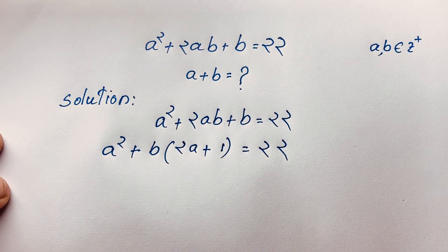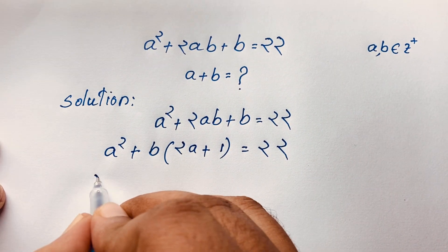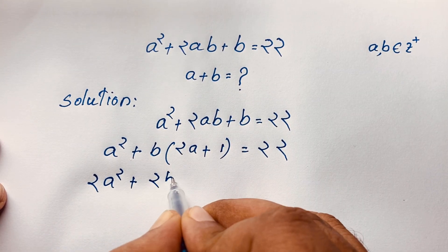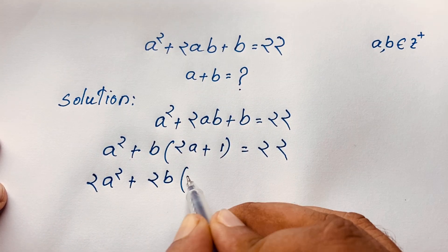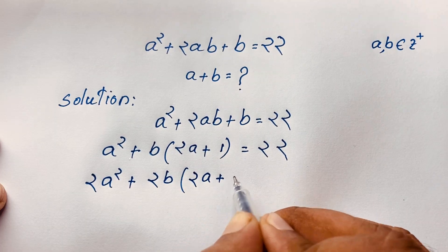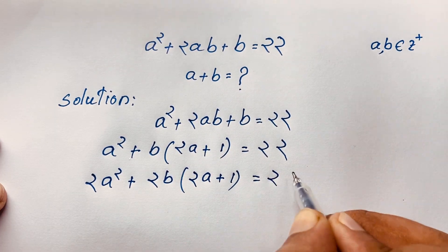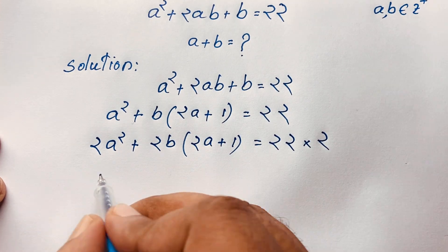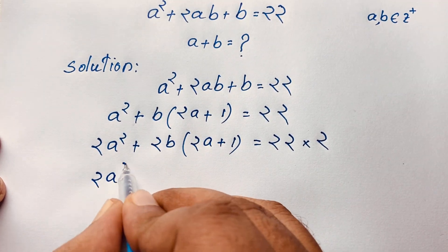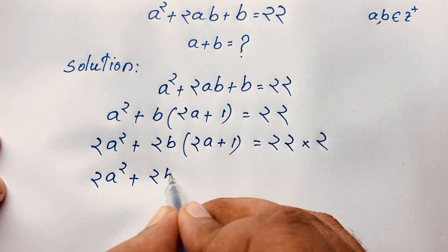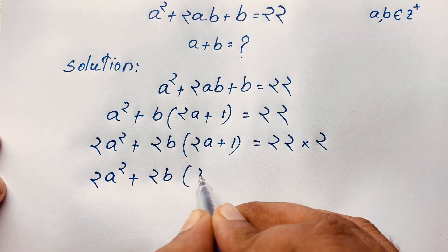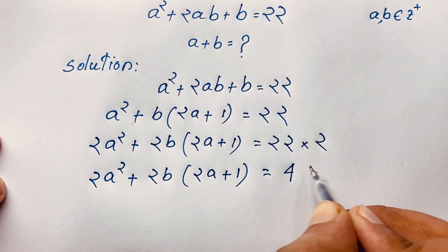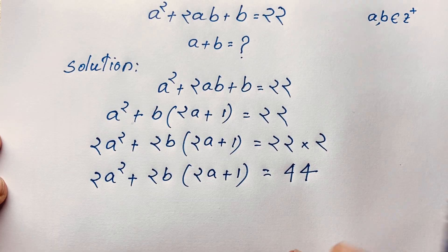Now I multiply both sides by 2, so it will be 2a squared plus 2b times (2a plus 1) is equal to 22 times 2. So we get 2a squared plus 2b times (2a plus 1) is equal to 44.